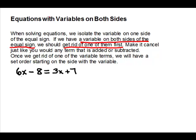Here's an equation with a variable on both sides. It has 6x on the left and 3x on the right — we need to get rid of one of those terms. It does not matter which one you choose. I'm going to choose to get rid of the 3x, so I want to make it cancel. It's a positive 3x, so I need to subtract it from both sides. I usually write it after the term it's going to combine with.